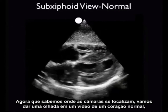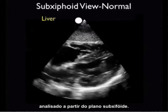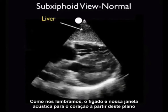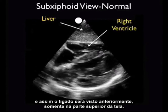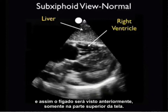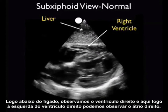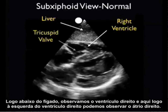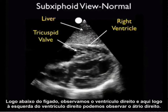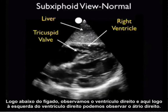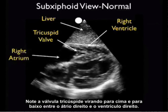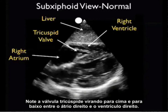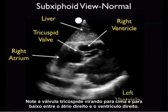Now that we know where the chambers are, let's take a look at a video clip of a normal heart from the subxiphoid plane. The liver is our acoustic window onto the heart from this plane, so the liver will be seen anteriorly at the top of the screen. Just below the liver, we appreciate the right ventricle. And just to the left of the right ventricle, we can appreciate the right atrium. Notice the tricuspid valve flipping up and down in between the right atrium and the right ventricle.